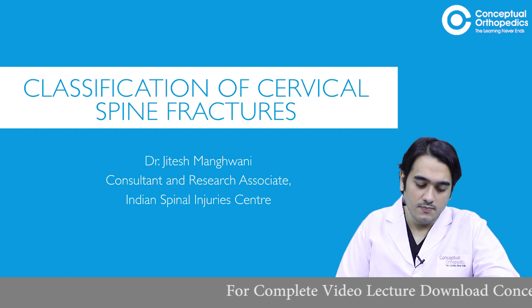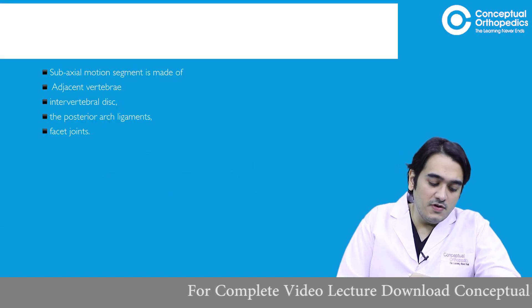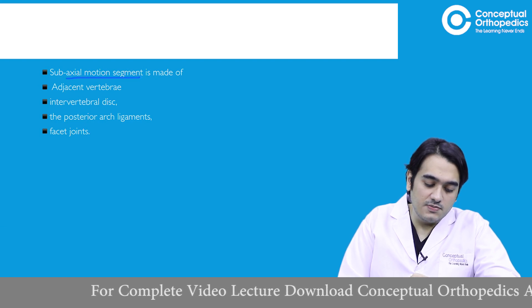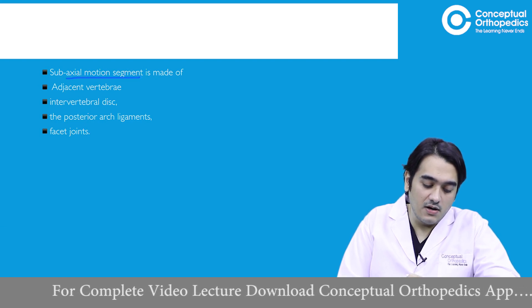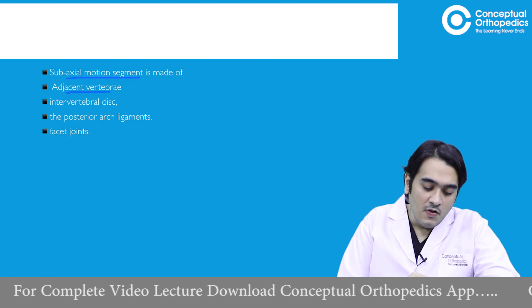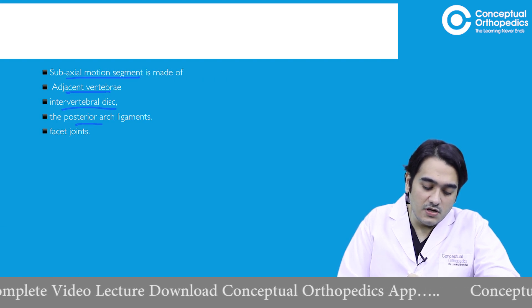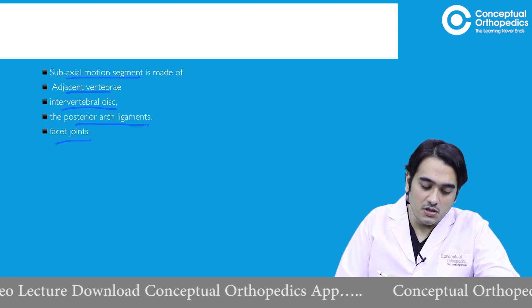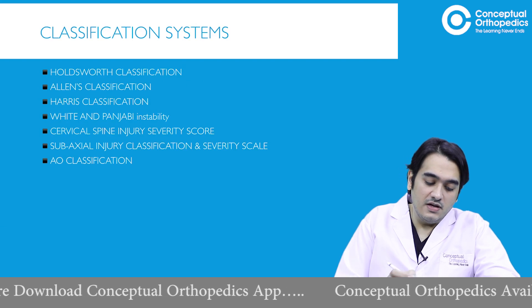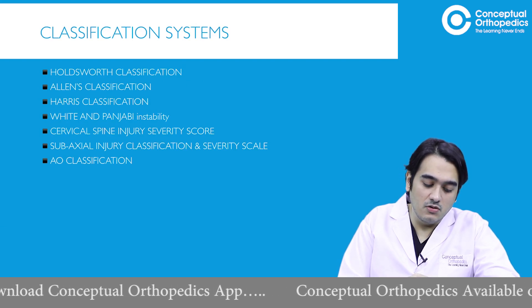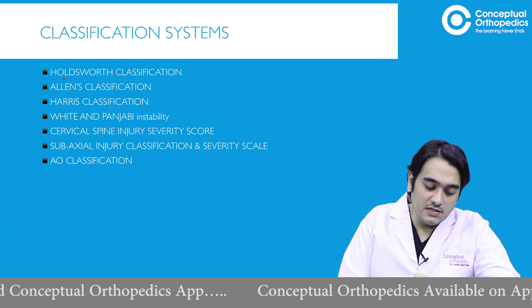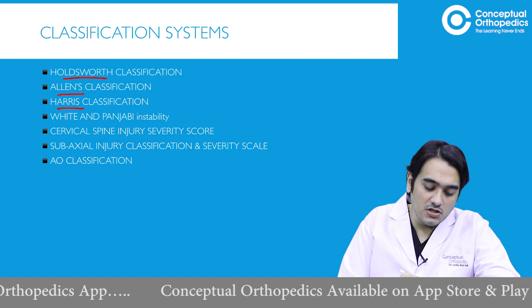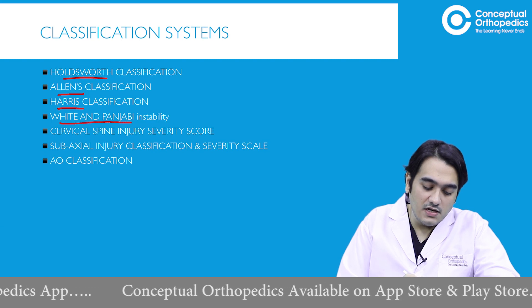First we have to understand what exactly is a subaxial motion segment. In the subaxial cervical spine, the motion segment is made of the adjacent vertebrae, the disc in between, the posterior arch ligaments, and the facet joints. Together these constitute the motion segment. The different classification systems used are: Holdsworth, Allen-Ferguson, Harris, White and Panjabi's criteria for instability.